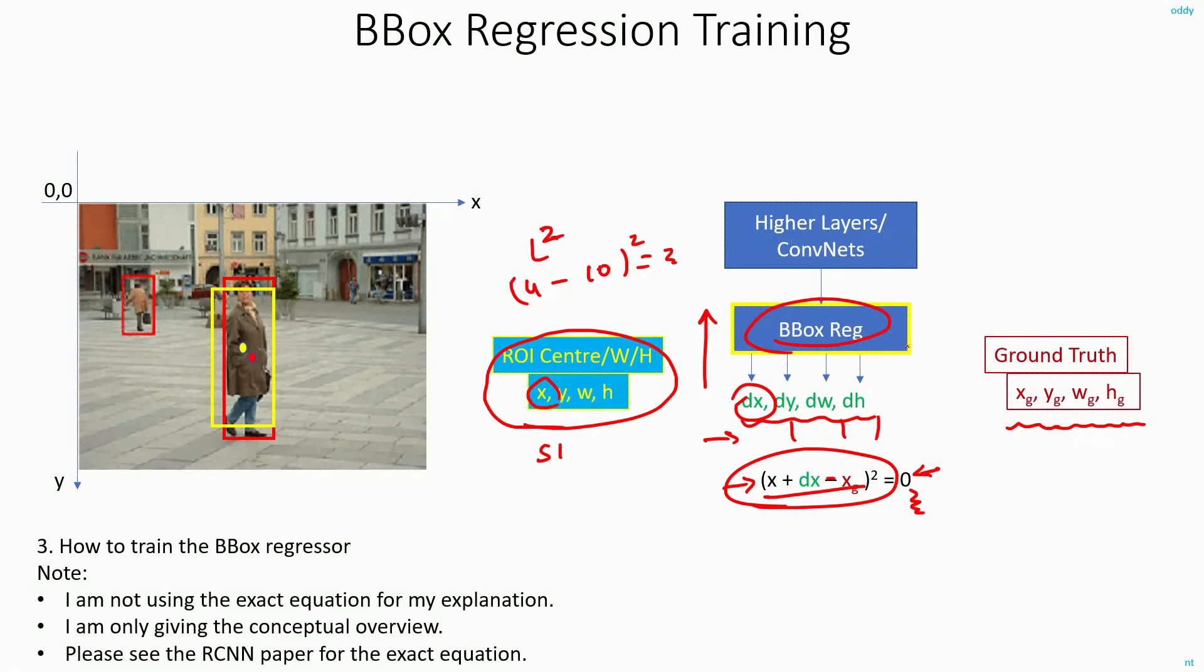Now with this, when you are doing the actual inference or testing, it will just output some values of dx, dy, dw, dh. You just add these values to x, y, w, and h respectively. And whatever value you get will be the dimension and location of your new, of the correct bounding box, refined bounding box.